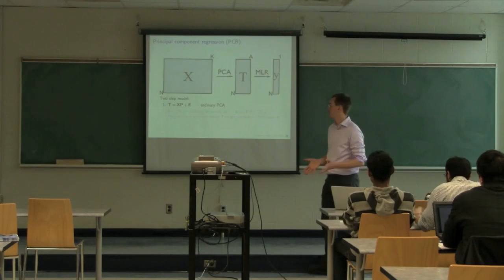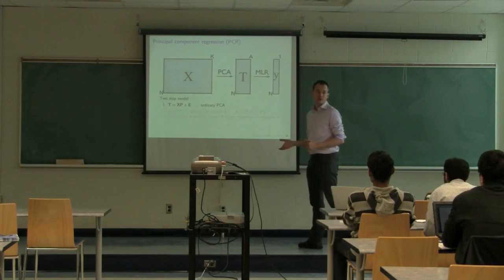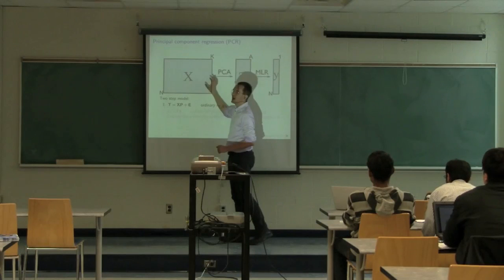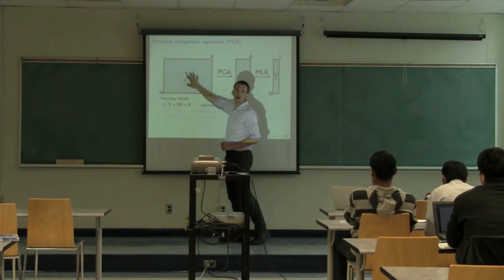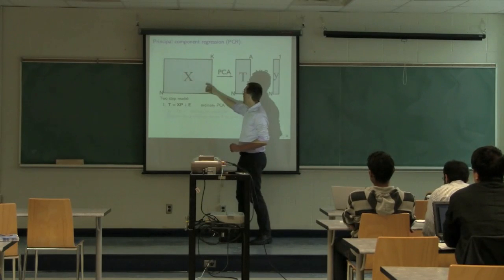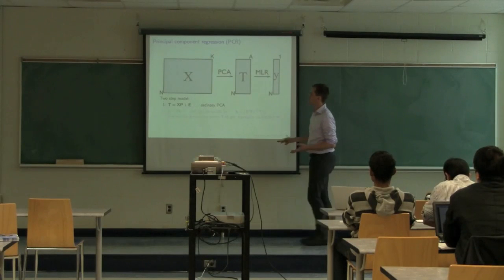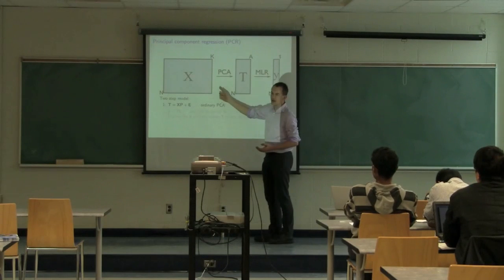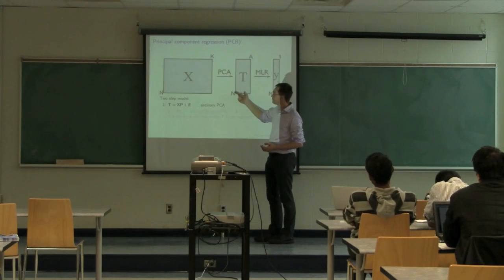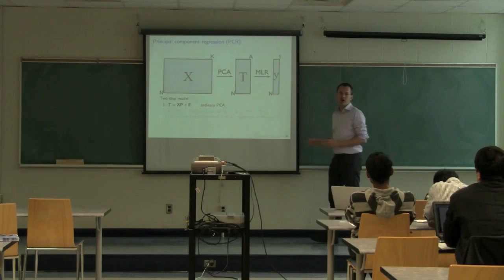Principal components regression overcomes all the problems from B-squared as follows. Take your X matrix, which has missing data, very correlated variables, and a lot of noise, and calculate PCA — which we've covered in the first few classes — and reduce those K columns from X to just A columns. That's step one, and it's easily done in the software.